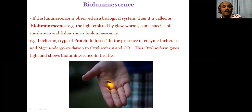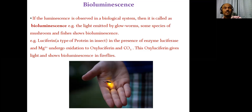Bioluminescence: the name itself indicates that if luminescence occurs in a biological system, it is called bioluminescence. Examples include light emitted by glowworms, some species of mushrooms, and fishes. For example, luciferin, a type of protein in insects, in the presence of the enzyme luciferase and Mg²⁺, undergoes oxidation to oxyluciferin and CO₂. This oxyluciferin gives off light, showing bioluminescence in fireflies. The mechanism is due to oxidation of the protein luciferin.